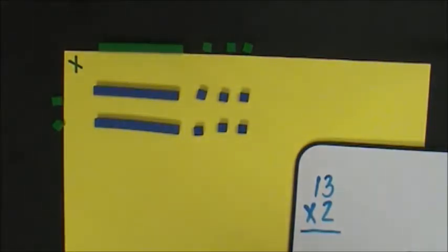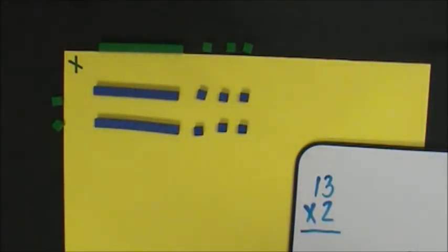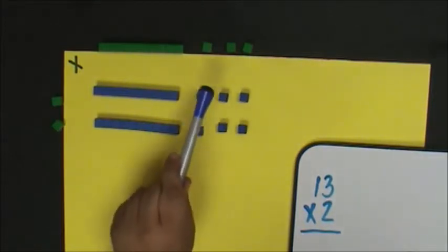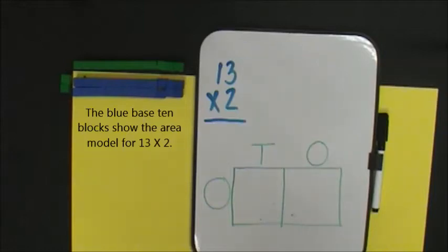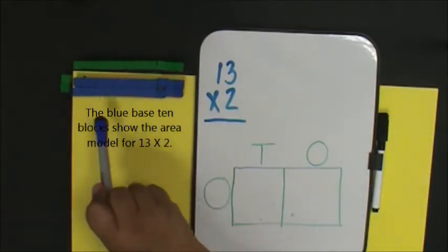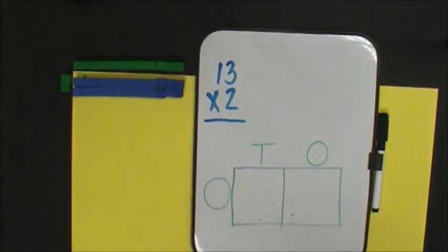The value of my tens is 20, the value of my ones is 6. Now I have an area model that covers the area of the product of 13 times 2.